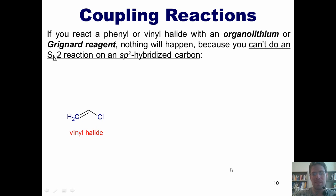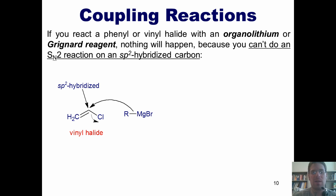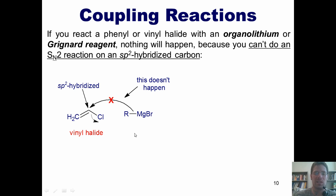You'll note that this carbon attached to the chlorine is sp2 hybridized. Now, if I react that with an organolithium or a Grignard reagent, you might imagine that there's a negative charge on the carbon bonded to the magnesium, and it's going to come in, form a bond with this carbon, and kick off the chlorine. Wrong — this does not happen. A nucleophile cannot come in and form a bond with an sp2 hybridized carbon while kicking off a halide. It just doesn't work.